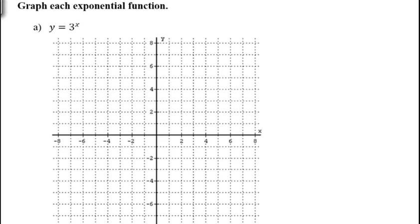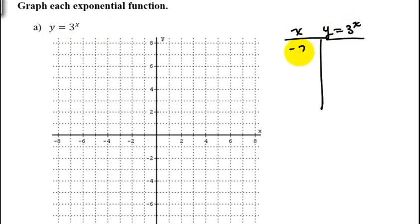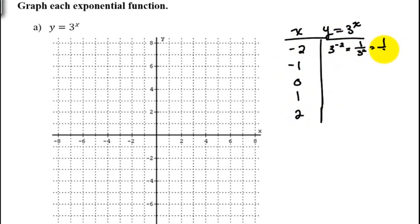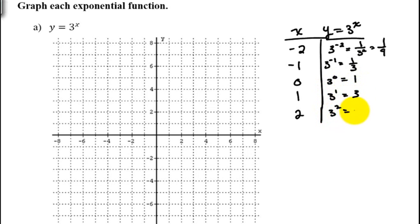Our first graph is y = 3^x, and we're going to make a table. We'll plot the points x = -2, -1, 0, 1, and 2. 3^(-2) = 1/9, 3^(-1) = 1/3, 3^0 = 1, 3^1 = 3, and 3^2 = 9. Our first point is (-2, 1/9), which is very close to the x-axis.